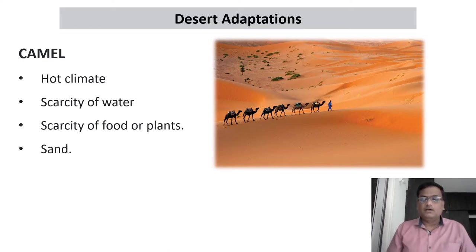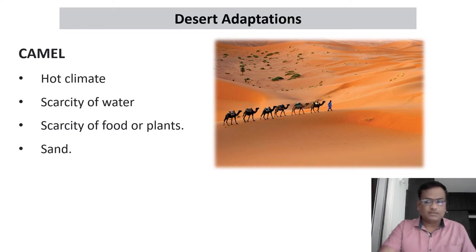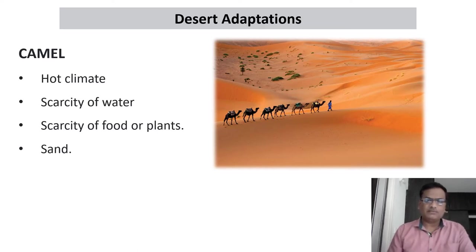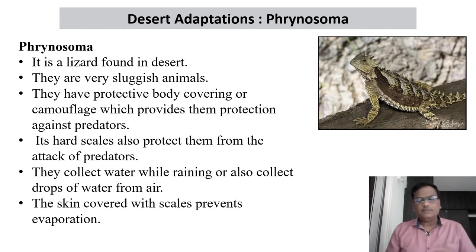There are some places in the desert which do not receive rain for many, many years — perhaps after a gap of 10 or 20 years. So you cannot expect life there. Despite this very harsh condition, we still find life — life forms are very few but not completely absent. There are some animals adapted to these harsh conditions. Desert is characterized by scorpions, snakes, and the most important mammal — the camel. Here we will study one lizard first — Phrynosoma.